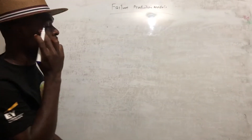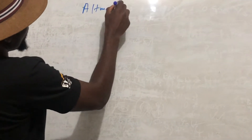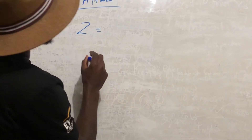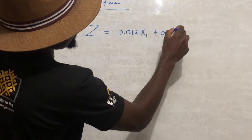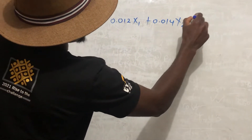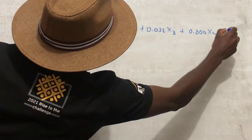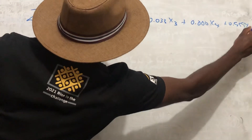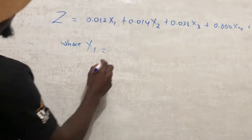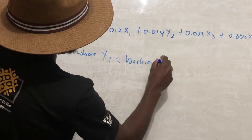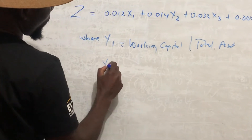Let me demonstrate the formulae for calculating the Altman Z-score and the Tafler Z-score. For the Altman Z-score, the formula is: Z = 0.012·X1 + 0.014·X2 + 0.033·X3 + 0.006·X4 + 0.999·X5, where X1 is equal to working capital divided by total assets, and X2 is equal to retained earnings divided by total assets.